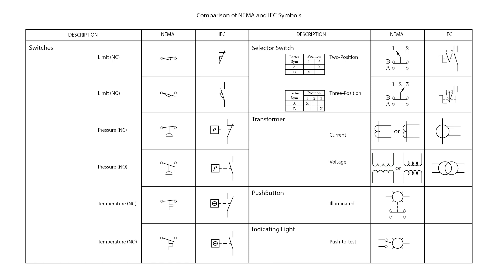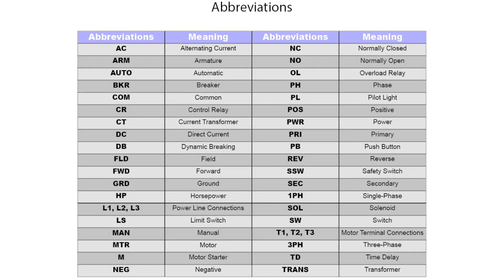So we have gone over a few symbols. Now let's look at some key abbreviations that will make it easier in reading and understanding motor electrical schematics. This list covers some of the most commonly used in motor control diagrams. You can pause the video or download this table in the link below to get familiar with all of them. For now, I want to go over the ones that we will see in this topic of understanding electrical schematics.